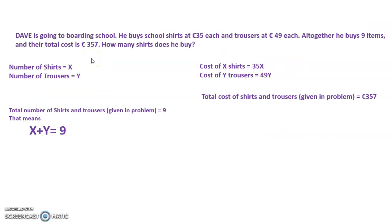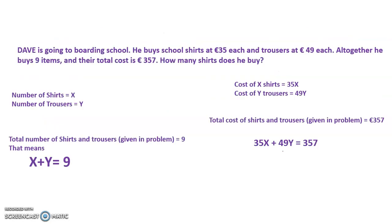Now, the total cost of both shirts and trousers together is given as 357. That means 35x plus 49y is equal to 357.